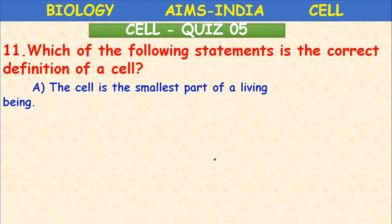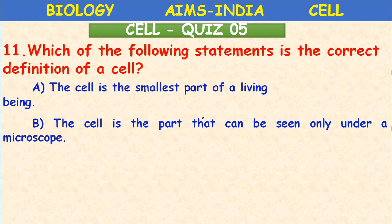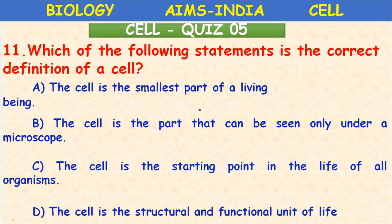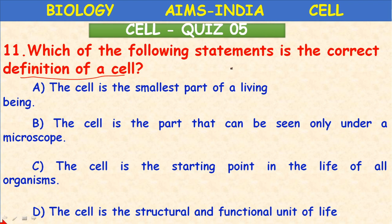Which of the following statements is the correct definition of the cell? The cell is the smallest part of a living being; the cell is the part seen only under a microscope; the cell is the starting point in the life of all organisms; or the cell is the structural and functional unit of life? Considering cell theory, the correct answer is D: the structural and functional unit of all living organisms.